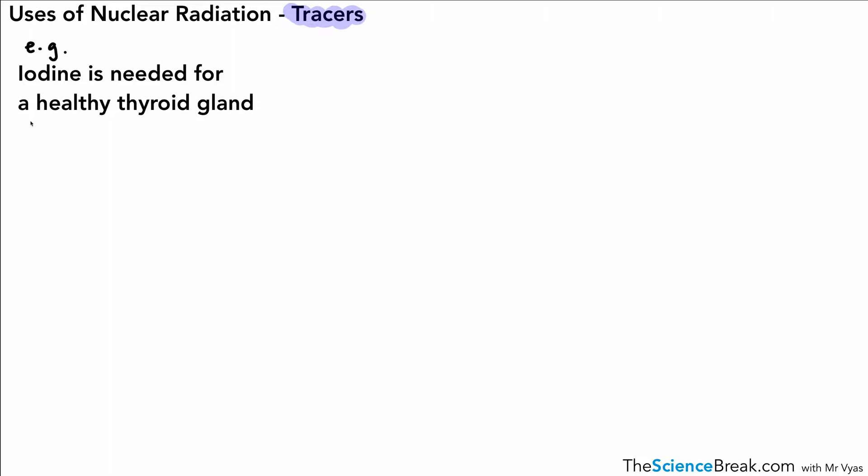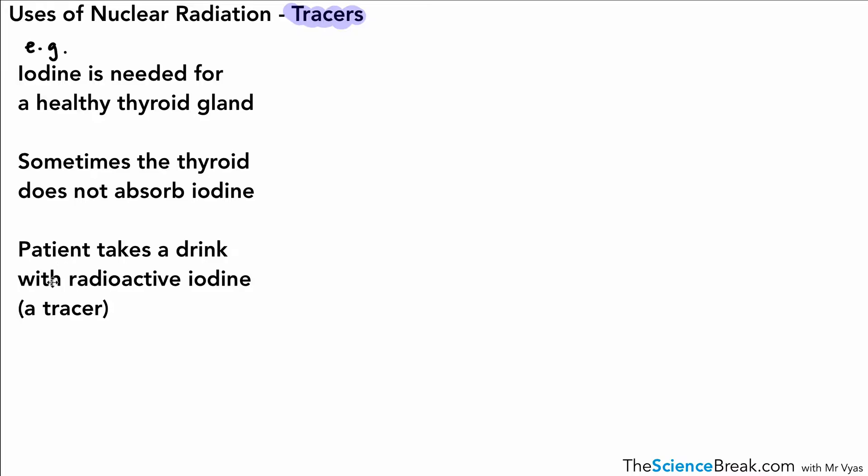Sometimes the thyroid gland does not absorb the iodine in the diet, which means it cannot function properly. The patient takes a drink containing radioactive iodine, which is the tracer, and after we've allowed a little time for the iodine to travel around in the blood to the thyroid gland...